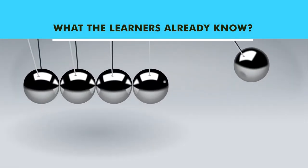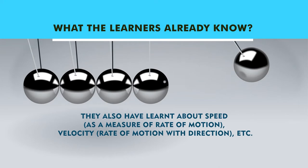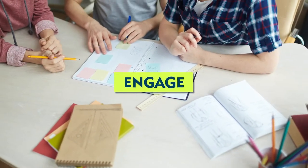First, you need to understand what your learners already know. They already know what motion is and how it is related to displacement. They must have learned about speed as a measure of rate of motion, and they may have exposure to the concept of velocity and the difference between speed and velocity — that velocity has direction also. They have also been exposed to acceleration, which is the measure of change in velocity with time. Now, how can you start your class and engage your learners?